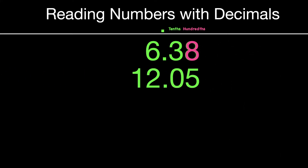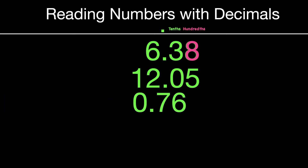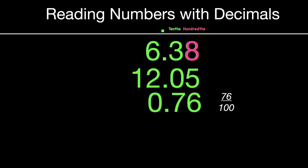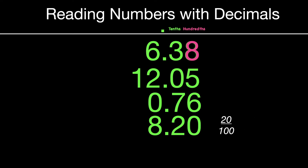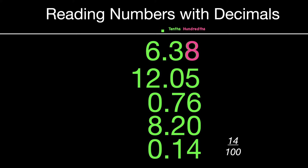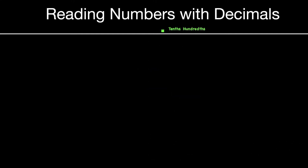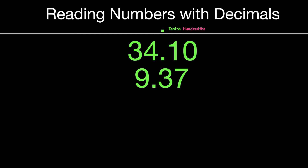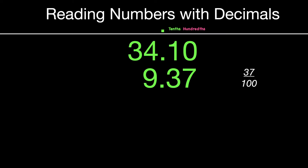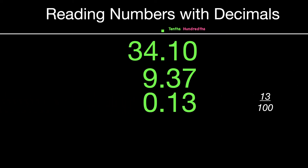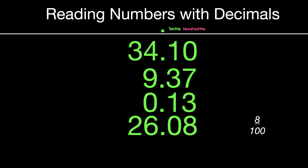Let's try another one: twelve and five hundredths. Notice that the zero five represents the fraction of five hundredths. Seventy-six hundredths would just represent the fraction of seventy-six one hundredths. Eight and twenty hundredths — the twenty represents twenty hundredths. Fourteen hundredths: the fourteen in the decimal place values represents the fraction fourteen one hundredths. Let's try a few more: thirty-four and ten hundredths, nine and thirty-seven hundredths, thirteen hundredths, twenty-six and eight hundredths, and finally, eighty-five hundredths.